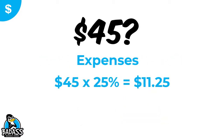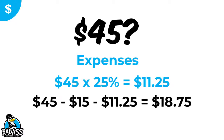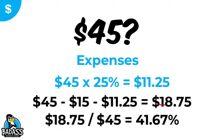Now let's see how expenses pan out. We take $45 times 25% and set aside $11.25. Then $45 minus the $15 in costs minus $11.25 in expenses leaves a potential profit of $18.75. That's $18.75 divided by $45, meaning we're hitting 41.67% profitability — way better than our 35% goal. Great markup; we're hitting our targets.